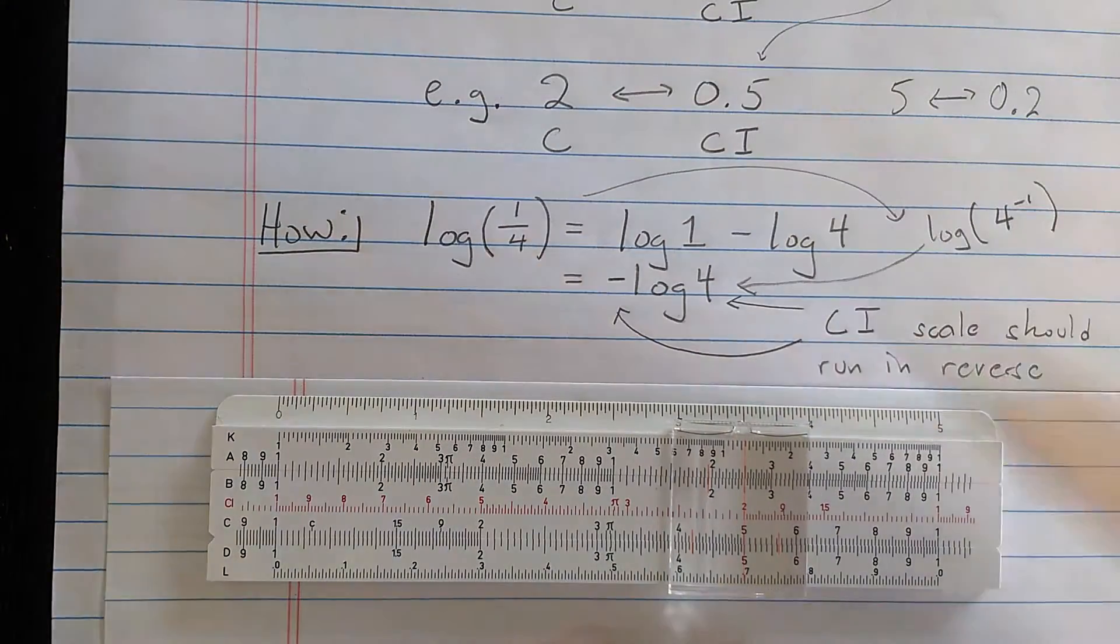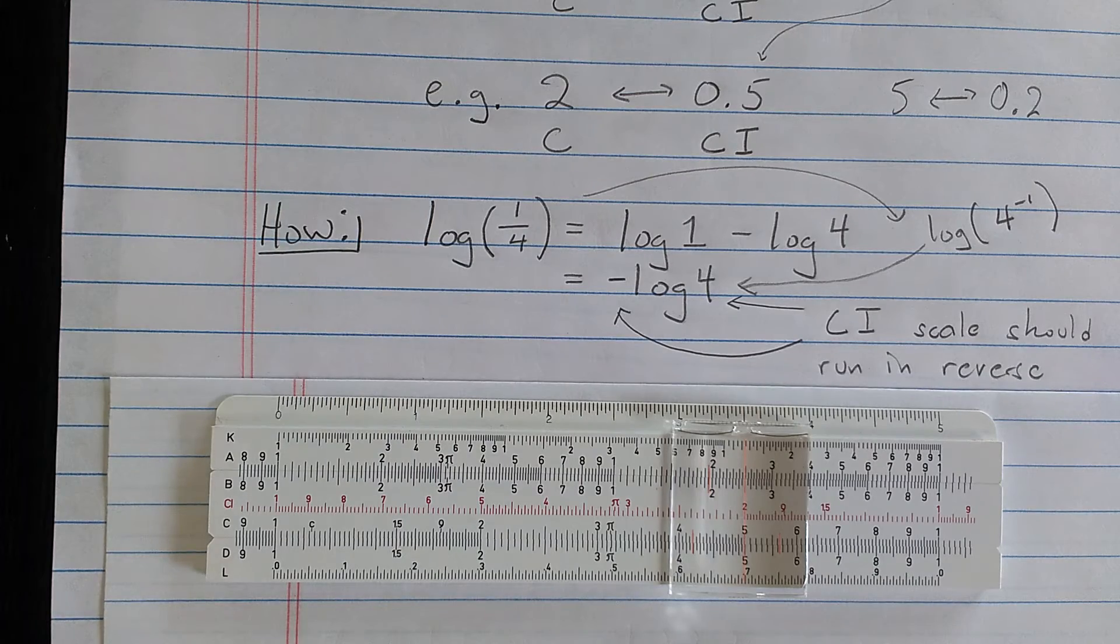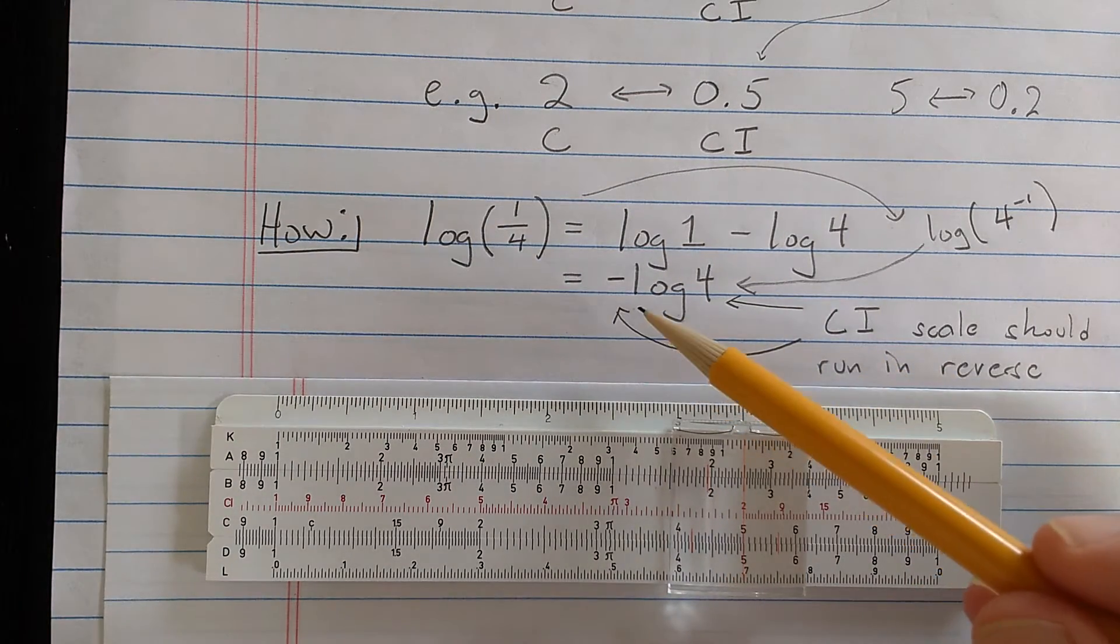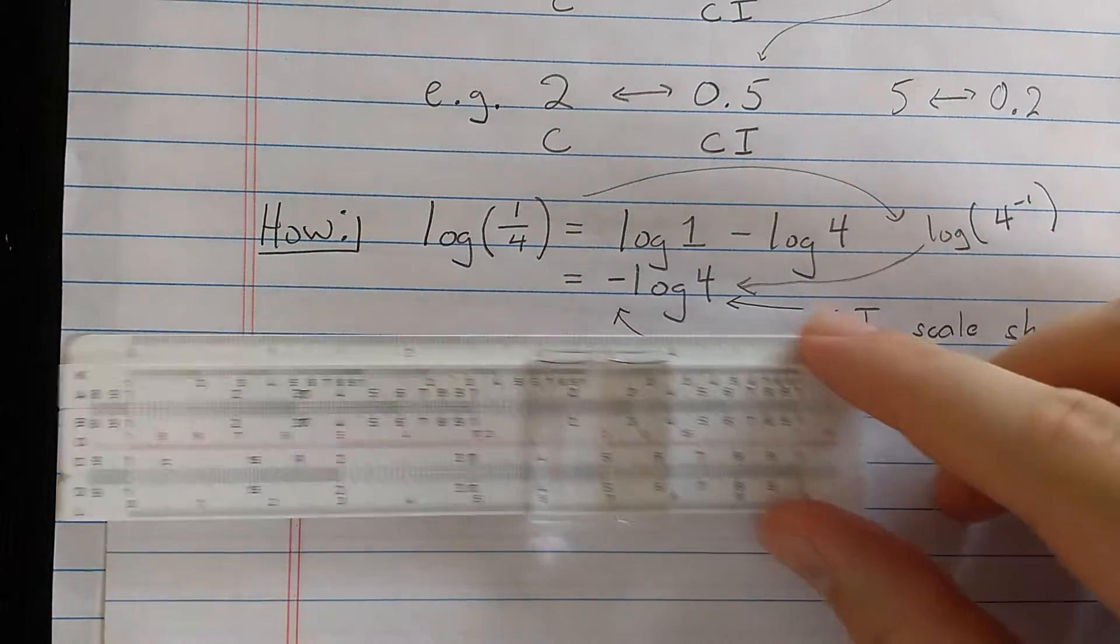And from this relationship, you see that the CI scale, the scale that you want for computing inverses, should run in reverse. What it should show is minus log of 4. So in other words, the CI scale should measure things in reverse. And you see it does.